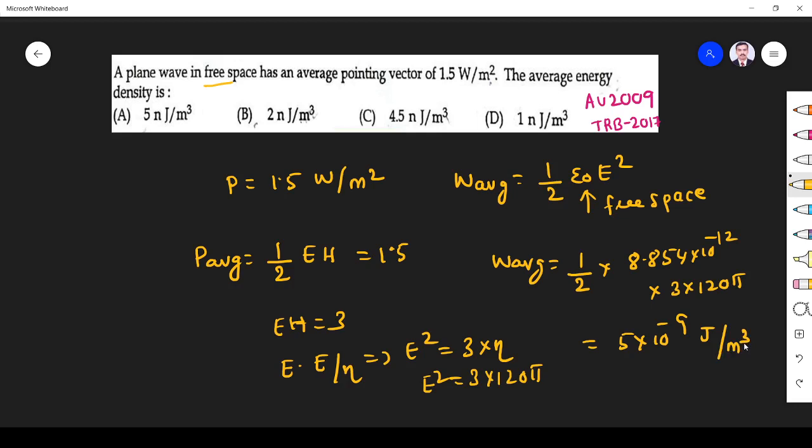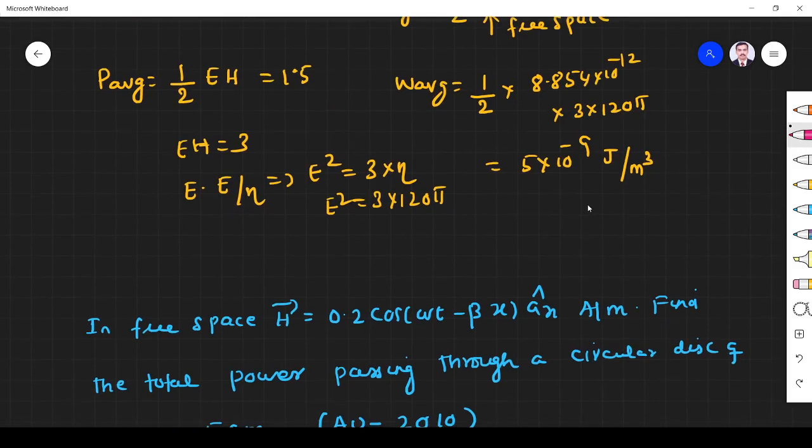If we simplify, what we get is 5 into 10 power minus 9 joule per meter cube. That's what you call our energy density. So the answer is option A. This is a simple problem. If you have any doubt you can ask.